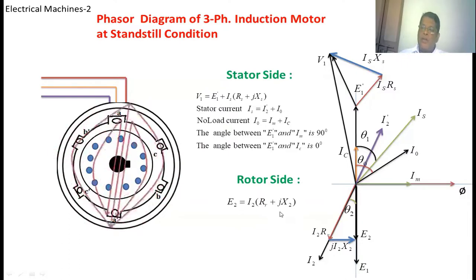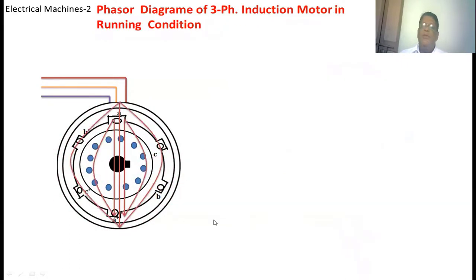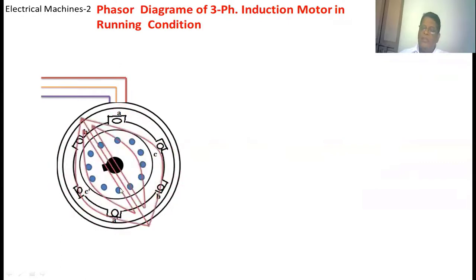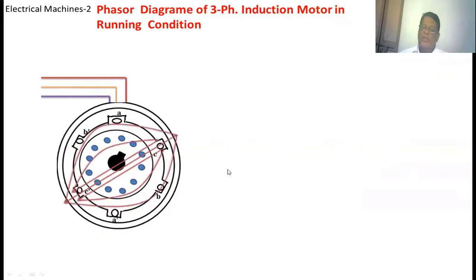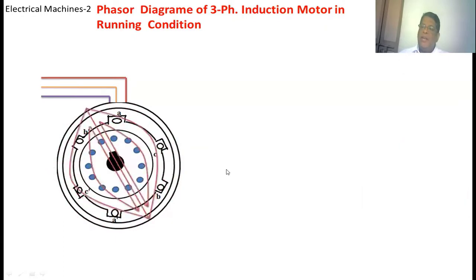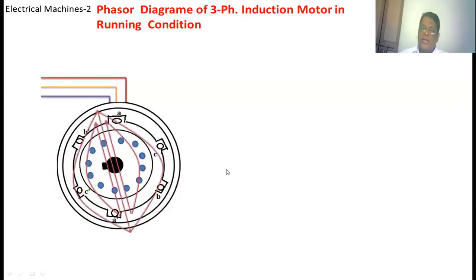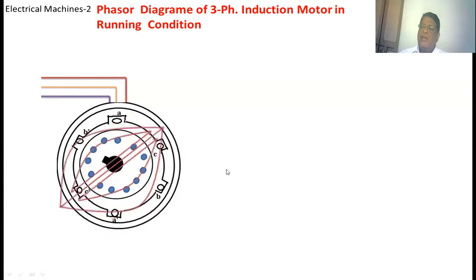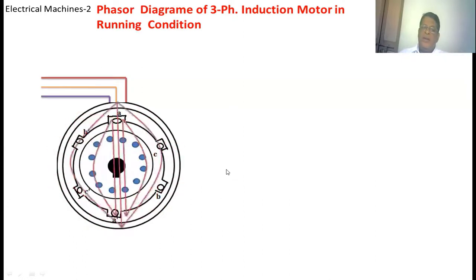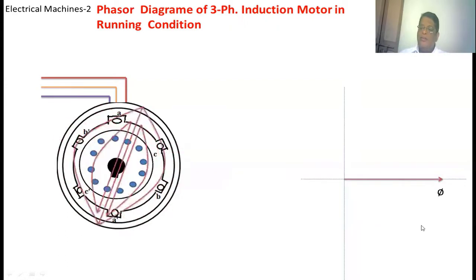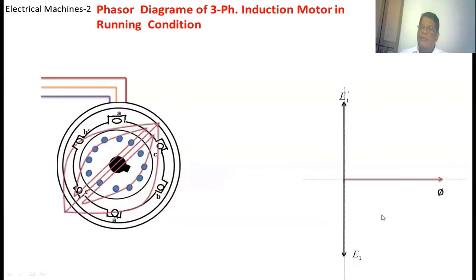Now we are going to see the phasor diagram of the induction motor at running condition. When a 3-phase supply is applied to the stator winding, the rotating field is created. This rotating field links with both stator and rotor windings, inducing a self-induced voltage in the stator and a mutually induced voltage in the rotor. These two voltages lag the mutual flux by 90 degrees. The induced rotor voltage drives current through the rotor bars, creating torque. The rotor runs in the same direction as the rotating field but always lags the stator speed.